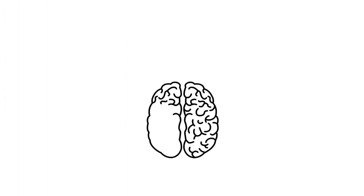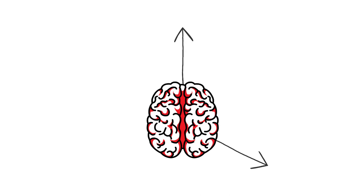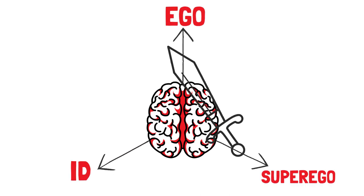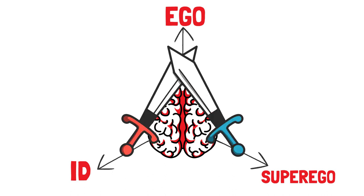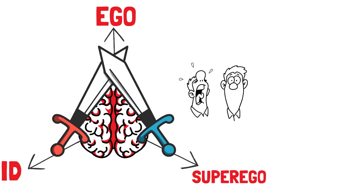Sigmund Freud proposed a model that divided the mind into three distinct regions—the id, the ego, and the superego. These three components work together, often in conflict, to shape our thoughts, feelings, and behaviors.